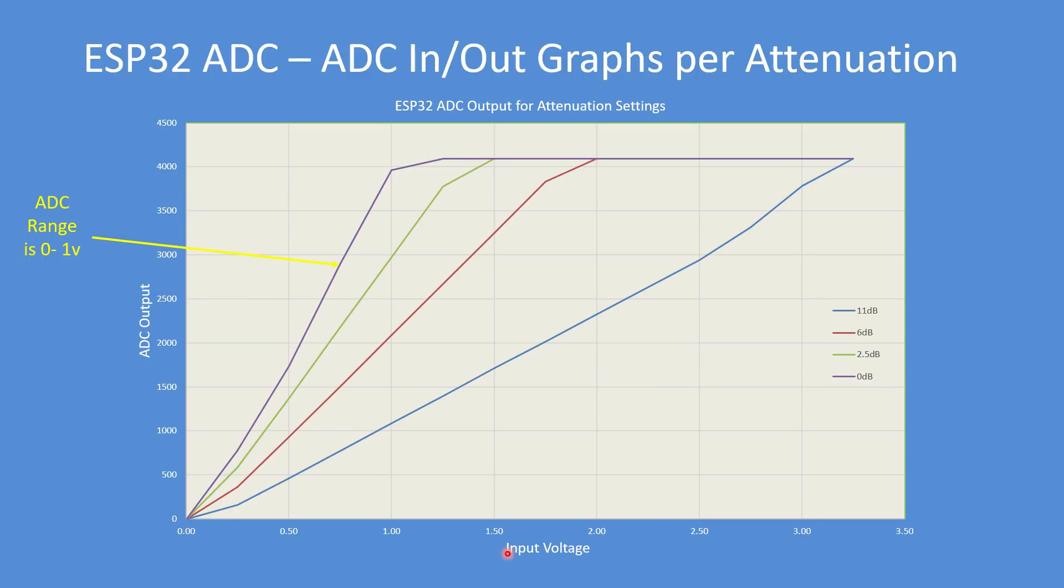These are the four ranges with different attenuation settings: either 0, 2.5, 6 or 11. In essence, with 0 dB which is this curve here, the range is 1 volt input. 1 volt is 0 to 4095 counts.